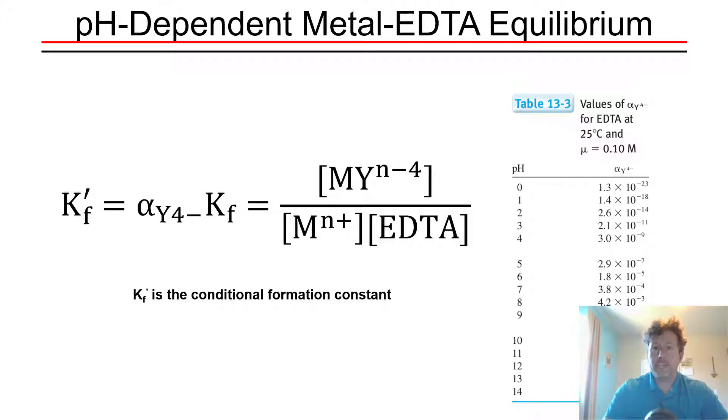Like any titration, a compleximetric titration is a general term for a titration that involves complexation of a metal cation by a Lewis base. EDTA titrations are probably the most common example of compleximetric titrations.